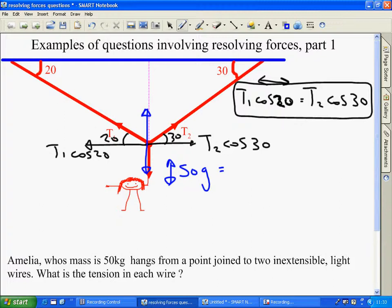Upwards we have the component of T2 in this direction. This one was cos 30, so this one must be T2 sin 30. And similarly, our other component, T1 acting up is T1 sin 20.